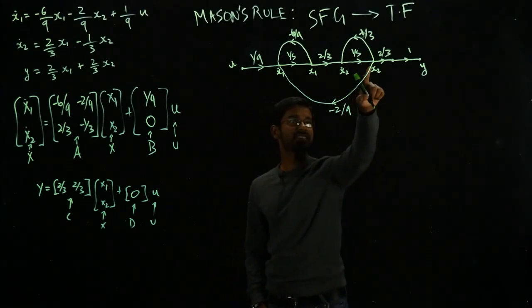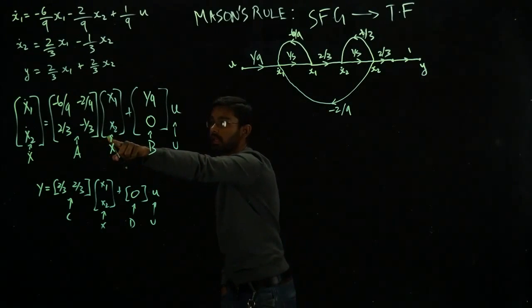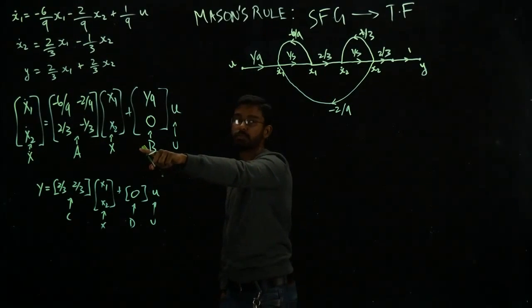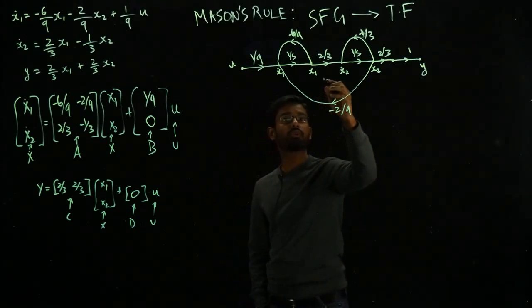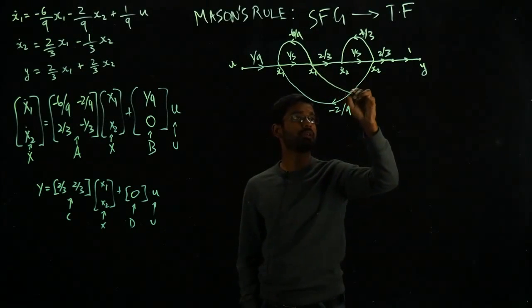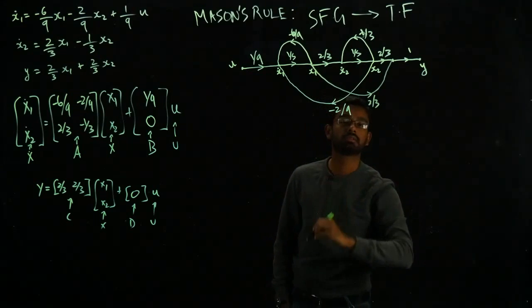I also need to add x₁'s contribution too. So I am going to go with 2 over 3 from x₁, right here. So what I have done is basically make the connections based upon how they are related. And these lines will have the gains written on top of them.